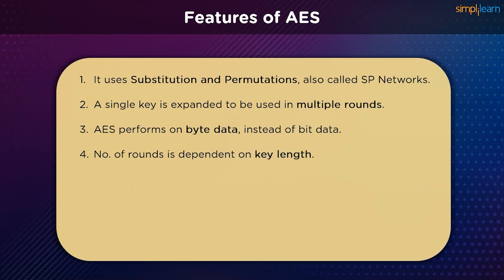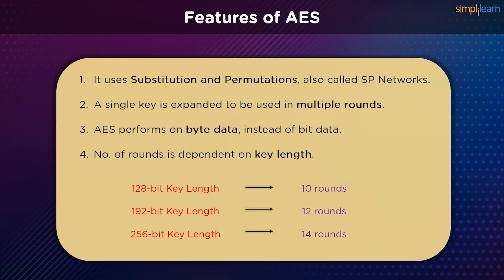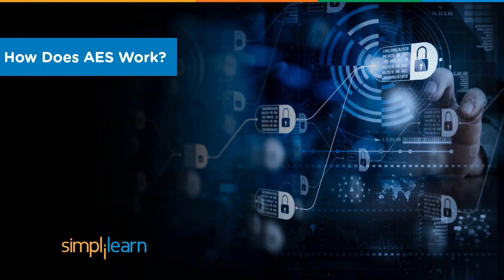The number of rounds during the encryption process depends on the key size being used. The 128-bit key size uses 10 rounds, the 192-bit key size uses 12 rounds, and the 256-bit key uses 14 rounds. A round key is required for each of these rounds, but since only one key is input into the algorithm, the single key needs to be expanded to get the key for each round, including round zero.